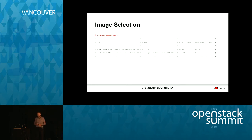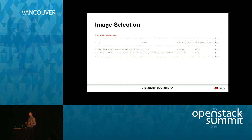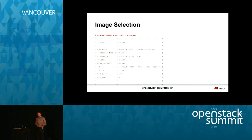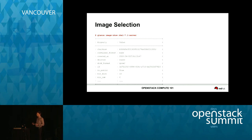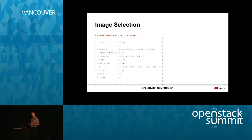If I do a Glance image list, I have two images in my Glance repository. The Nova image list command actually simply proxies the Glance API — the information comes from the same place. When I do an image show on my RHEL 7.1 server image, the most important thing to note is the minimum disk size. This particular image has a minimum disk size of 10 GB, so when deployed it will expand to have a root partition of 10 GB. If I choose a flavor with less space than that, it's going to fail.